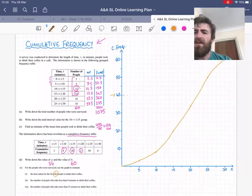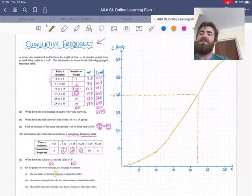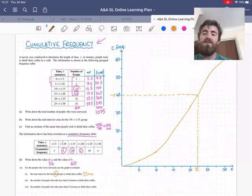So I can trace a line across from 40 and go all the way across the line, and then go down to the time axis, x-axis. And I should get something like 22 minutes. So that point on the graph is telling you that 40 people took 22 minutes or under. So the answer to this question would be 22 minutes, roughly.